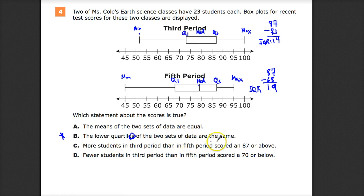More students in third period than fifth period scored an 87 or above. Here's an 87, so right in here. And same thing here. The reality is if the Q3 is here, that means if there's 23 students, the same number pops up here and here.